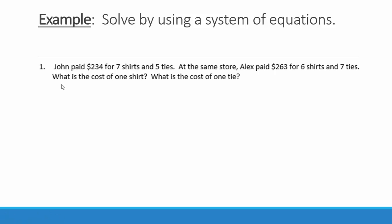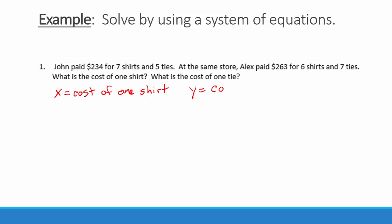To determine what our variables are going to mean, we are going to look at the questions asked. We are asked what is the cost of one shirt? So let's let our x variable equal the cost of one shirt. Our other question is what is the cost of one tie? So let's let our y variable equal the cost of one tie. Our first sentence gives us information to create our first equation.